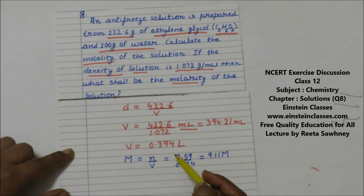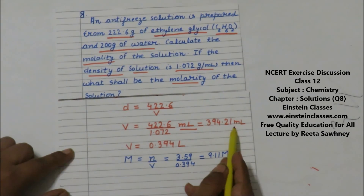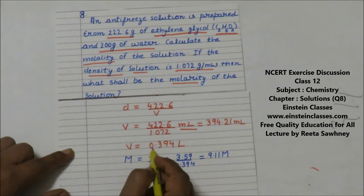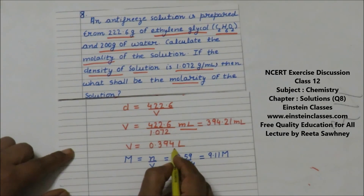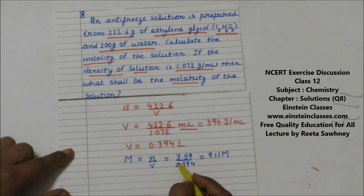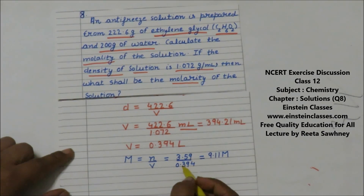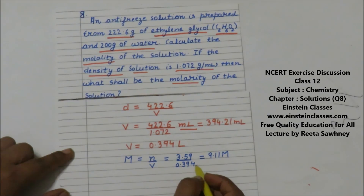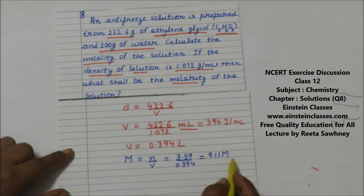Converting volume from ml to liters by dividing by 1000, the volume of solution comes out to be 0.394 liters. Molarity = moles of solute / volume of solution = 3.59 / 0.394 = 9.11 molar.